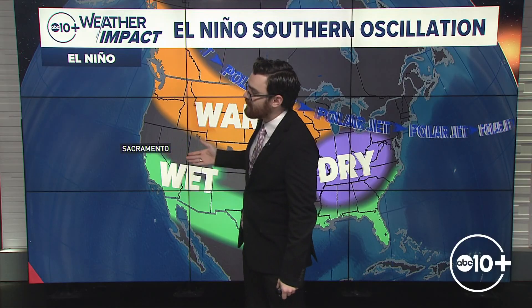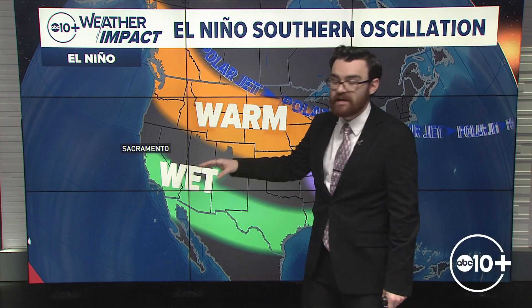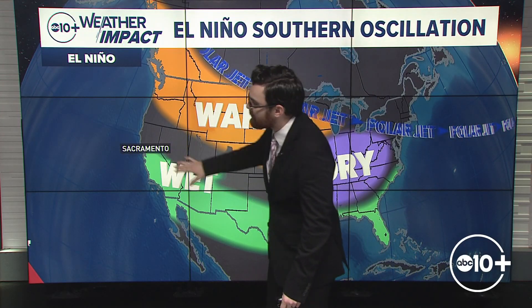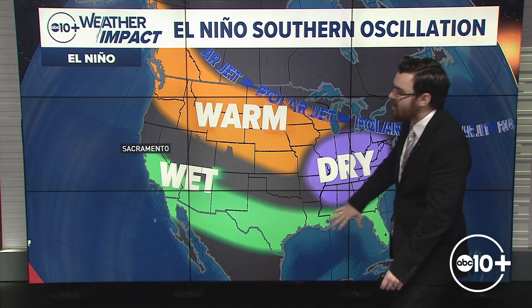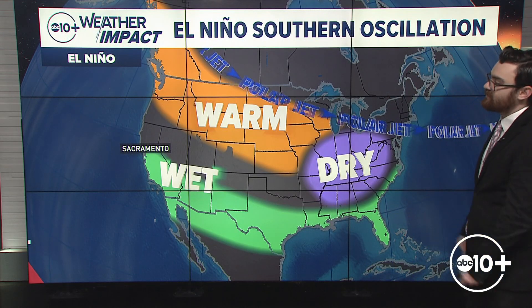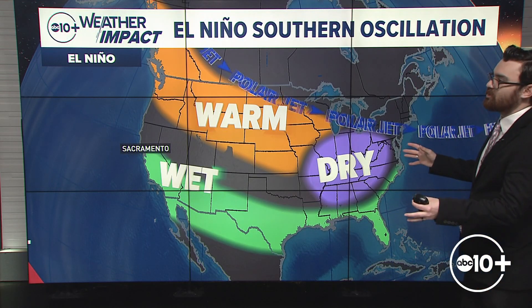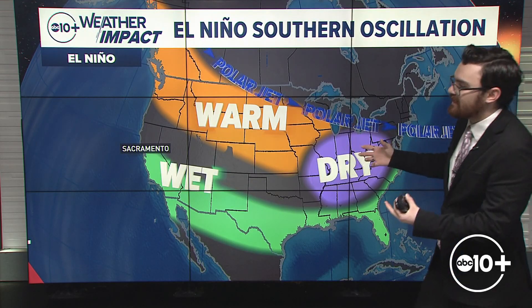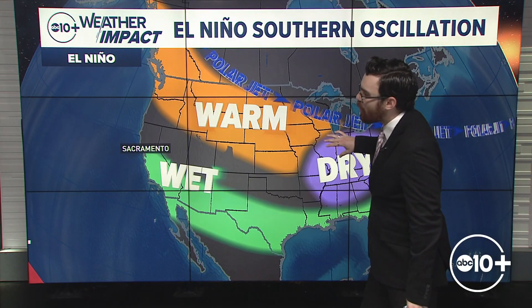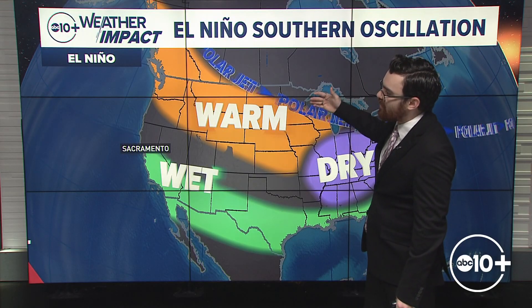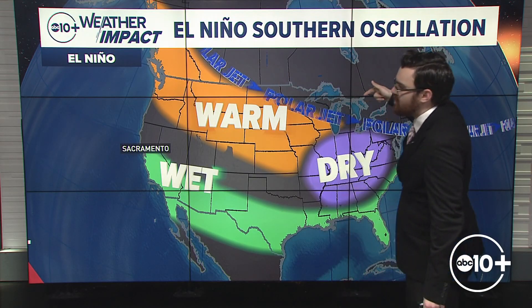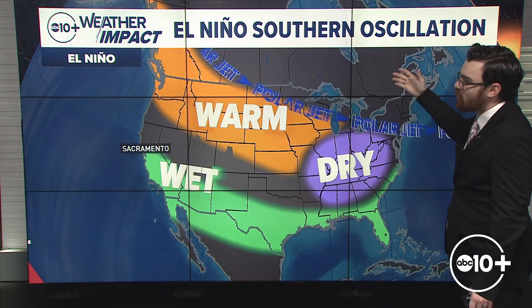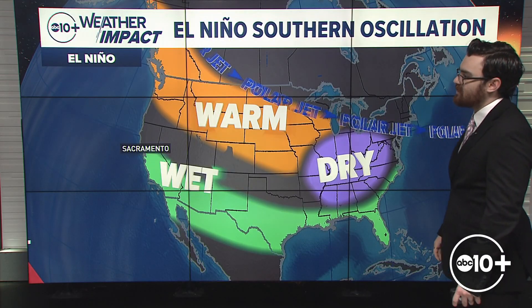Under El Niño, basically from Sacramento to the south is typically a wetter than average period, especially during the wintertime. But it's not just California — we also see wetter than average conditions across much of the southern United States. It is also typically a warmer winter for the northern part of the United States, because the polar jet is further to the north during an El Niño setup.